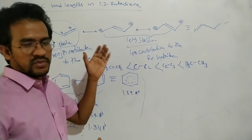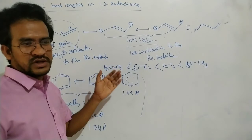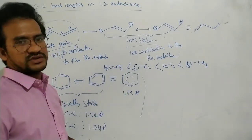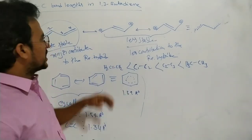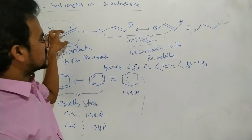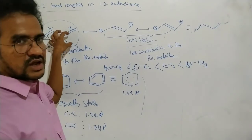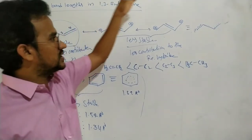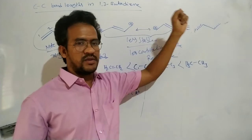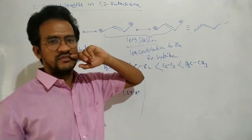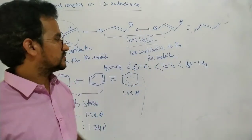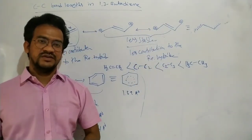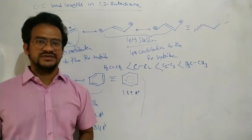If more number of covalent bonds are there, that resonance structure is a more stable resonant structure. And a more stable resonance structure contributes a major percentage to the resonance hybrid. Thank you for watching. Please subscribe to my channel for more videos.